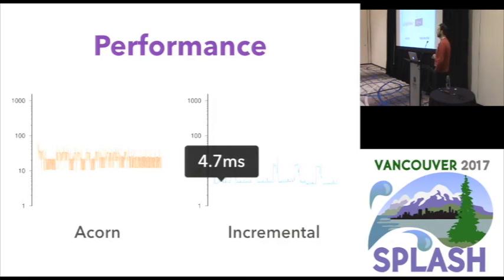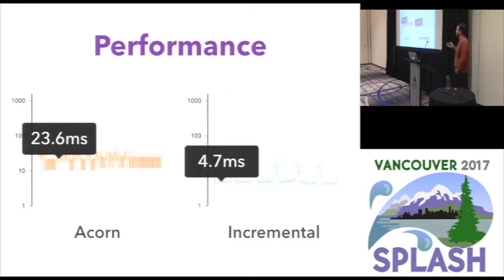To put this in context of a non-packrat parser and a non-incremental parser, there's a parser called Acorn, which is a really fast, mostly predictive parser, hand-optimized JavaScript parser. And their parse times are closer to 23 milliseconds. So it's maybe not super surprising because an incremental parser, you would hope, is going to be faster than a non-incremental parser. But still, this for us was a really nice result that we can actually beat a hand-optimized parser.